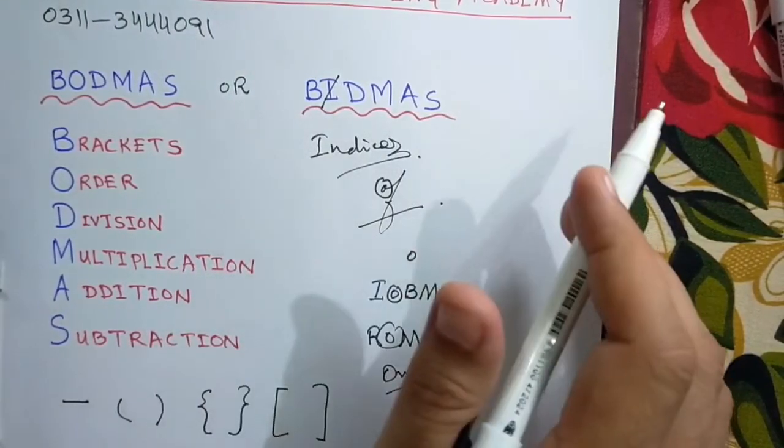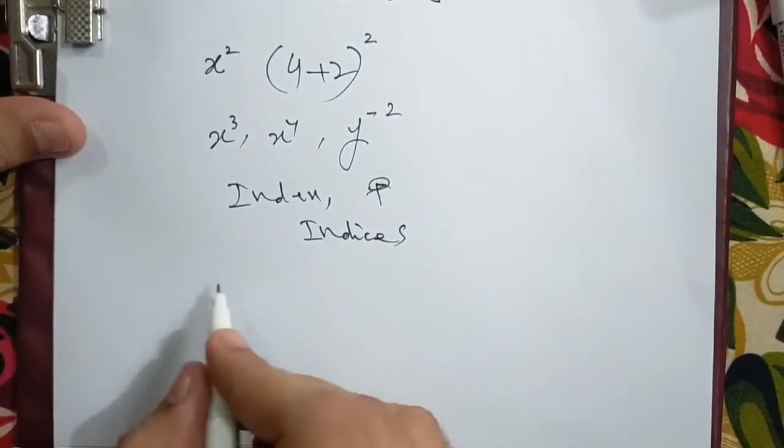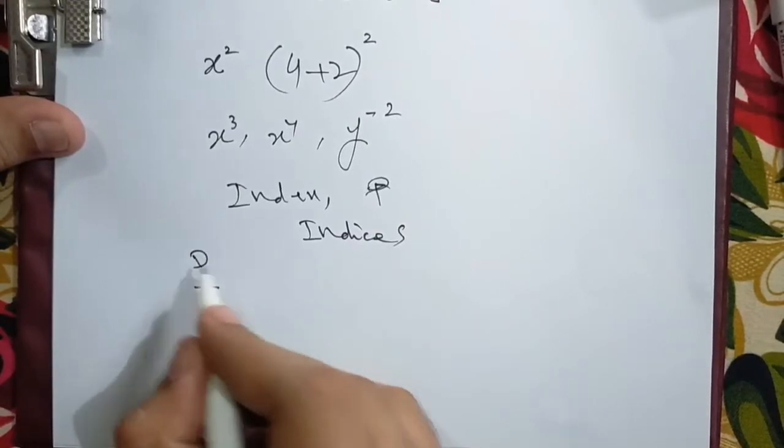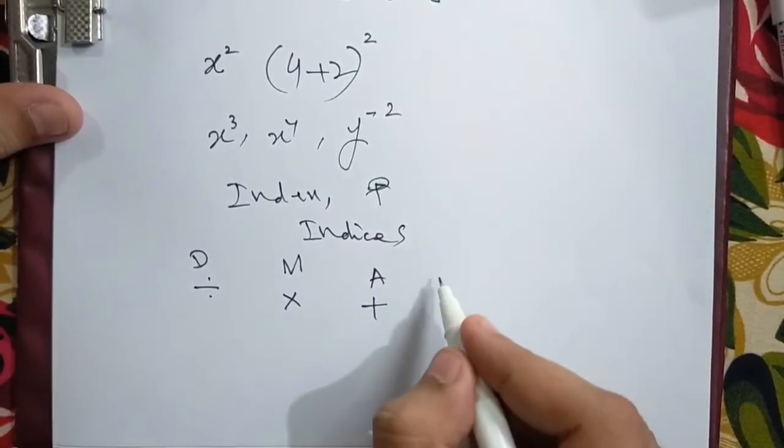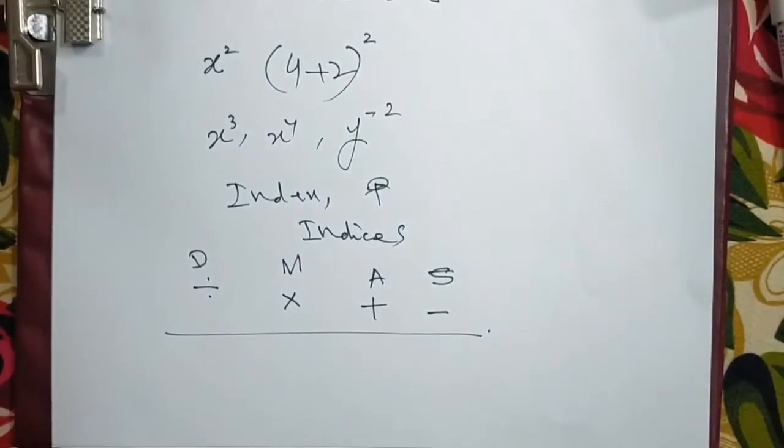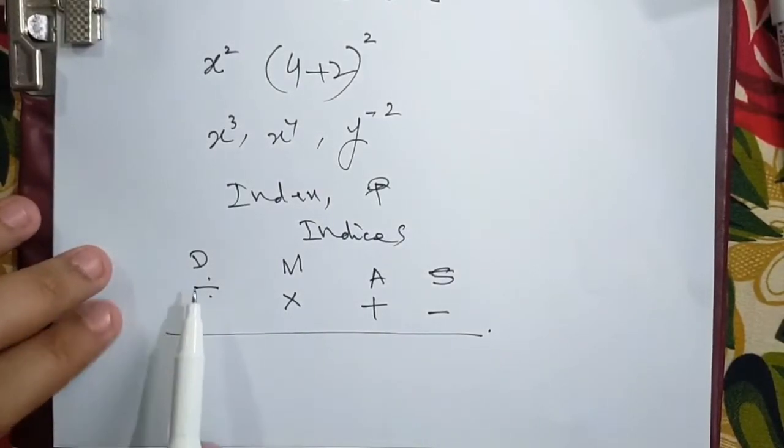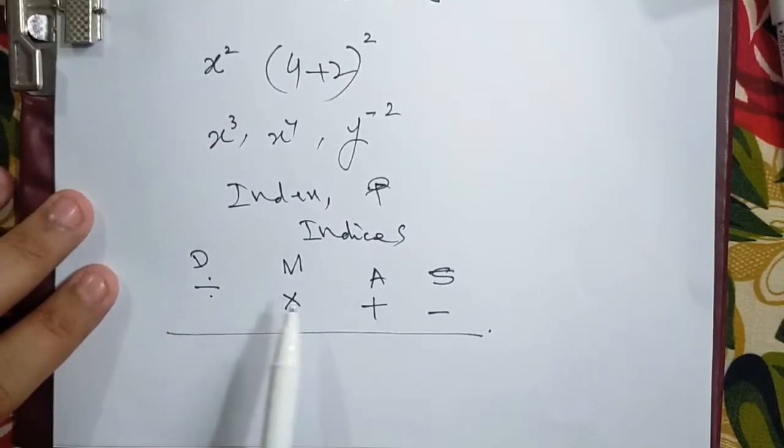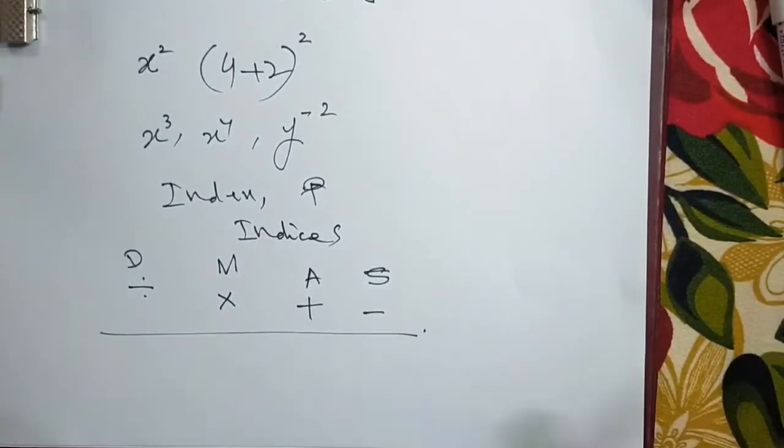Then there come four basic operations, which is division, then comes multiplication, then comes addition, then comes subtraction. This is the order of solution, of solution of operations. Whenever in any expression there are these four basic operations involved, we will solve that sum by this order. We will solve division first of all, then multiplication, then addition, then subtraction.